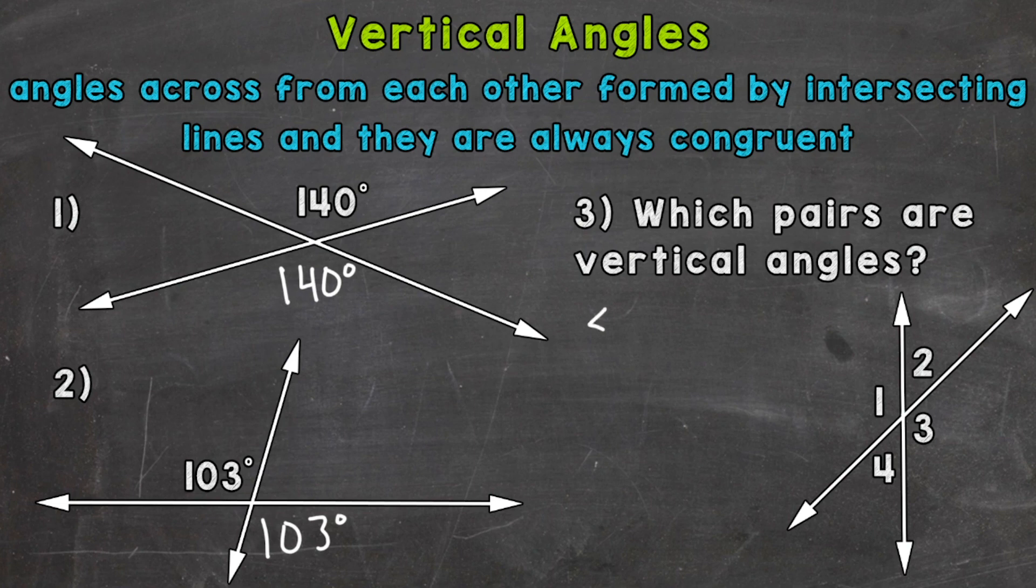So angle one and angle three are vertical angles. And then we have angle two and angle four. And there are our vertical angles from the angles given.